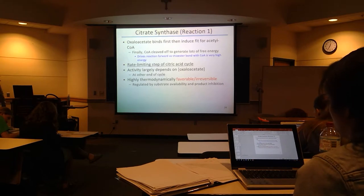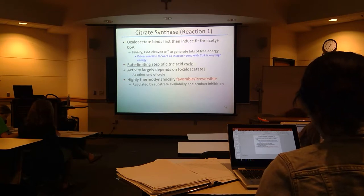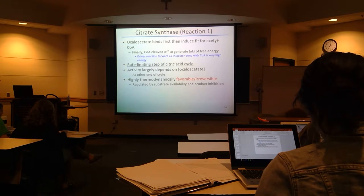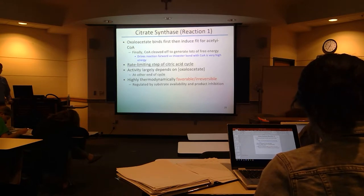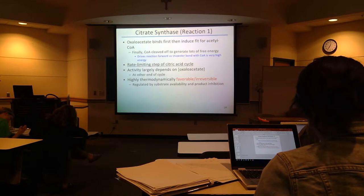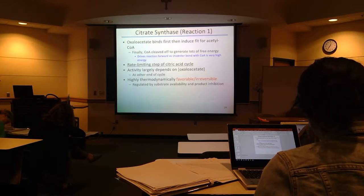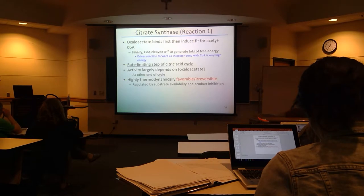This is a pretty much irreversible reaction with a very strongly negative standard free energy change, and it really dictates the rate for the whole cycle. This is a pretty important enzyme — if this is really active, the whole flux of the cycle will be much higher. This is an induced-fit mechanism. Oxaloacetate binds to the enzyme active site first, causes a conformational change that allows acetyl-CoA to bind. Then the carbon-carbon bond formation actually occurs. It's very specifically ordered.